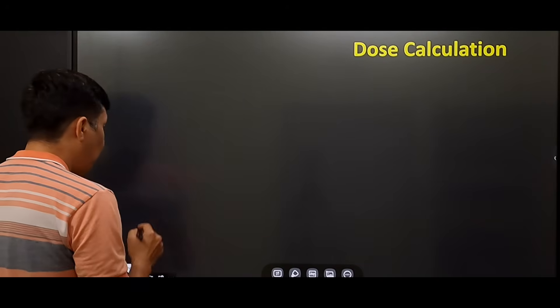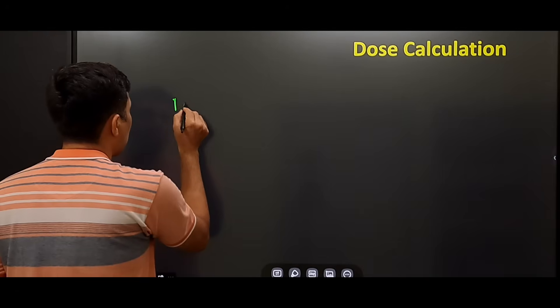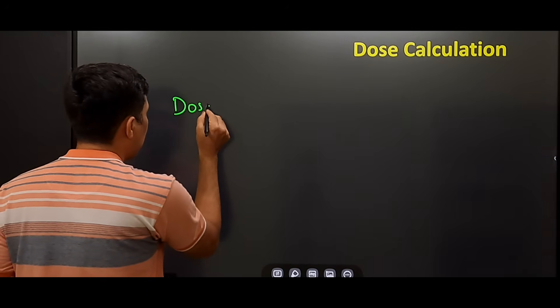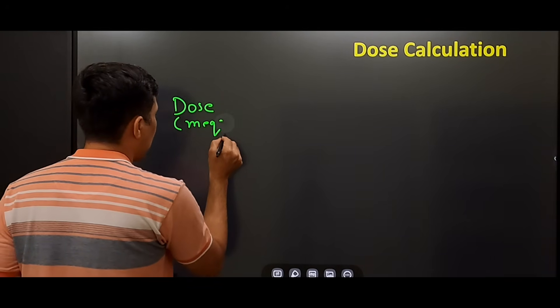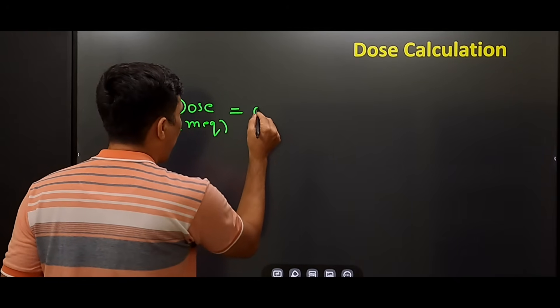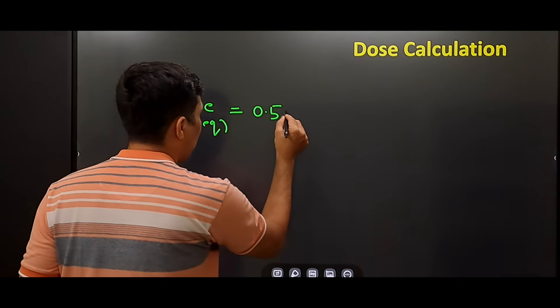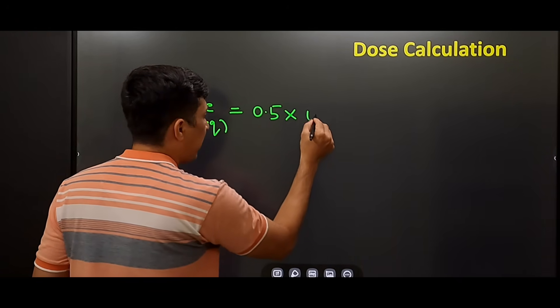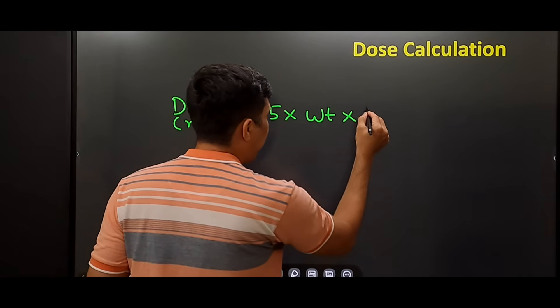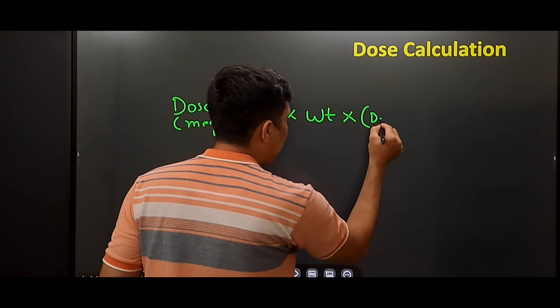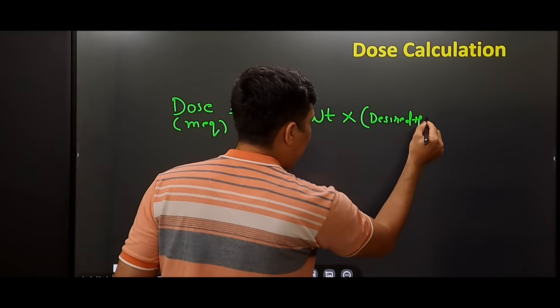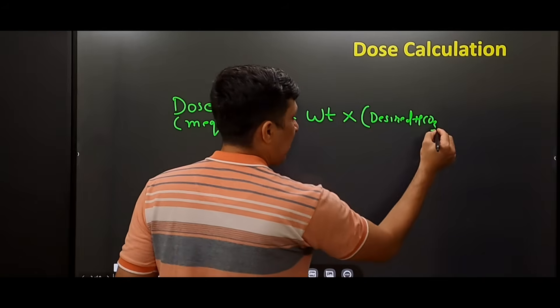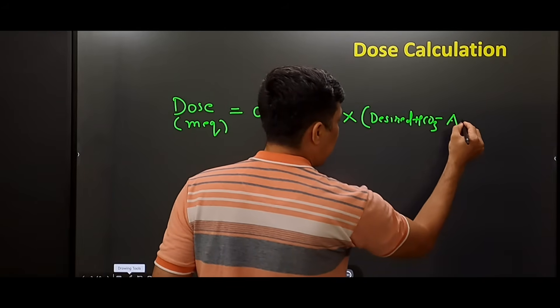Now we will see how the dose is calculated with a formula. The dose that is required to be given in milliequivalents is equal to 0.5 multiplied by weight of patient multiplied by desired bicarb minus actual bicarb.